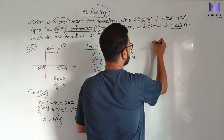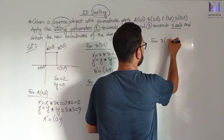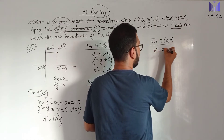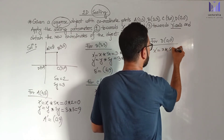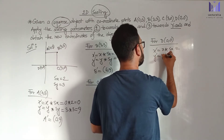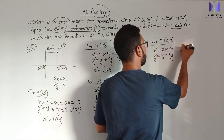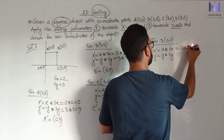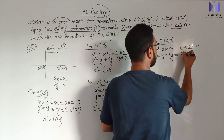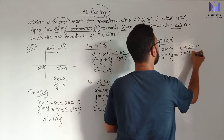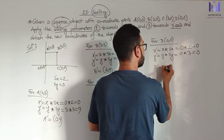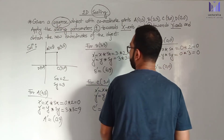For point D at (0, 0): x-prime equals x into sx, so 0 into 2 equals 0. Y-prime equals y into sy, so 0 into 3 equals 0. Therefore D-prime is (0, 0).